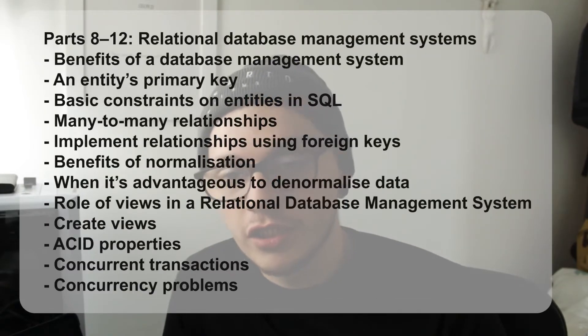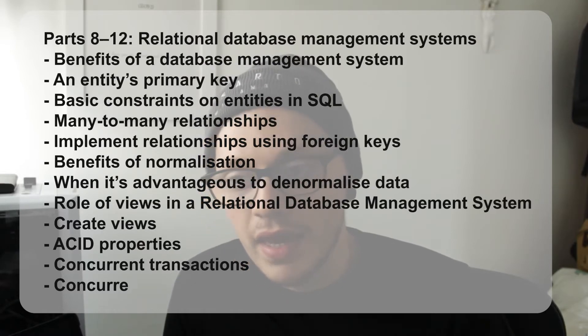Parts 8 to 12 look at relational database management systems — RDBMS. You'll look at the benefits of a database management system, entity primary keys, basic constraints on entities in SQL, many-to-many relationships, implementing relationships using foreign keys, benefits of normalization, when it's an advantage to denormalize data, the role of views in a relational database management system, creating views, ACID properties, concurrent transactions, and concurrency problems. If you've never studied anything to do with data, this is probably a lot to take in, but maybe if you studied M269 you might find it more familiar.